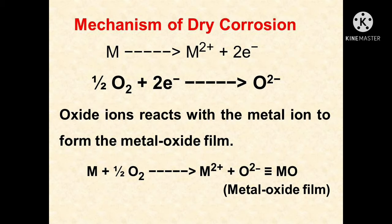The mechanism of dry corrosion: oxidation occurs first at the surface of the metal, resulting in the formation of metal ion M²⁺, which occurs at the metal and oxide interface. The metal M is converted into metal ion M²⁺, releasing two electrons. The oxygen changes to ionic form due to transfer of electrons from the metal, which occurs at the oxide film and environment interface. The metal and oxygen are converted into metal ion and oxide ion, and this oxide ion reacts with the metal ion to form the metal oxide film.